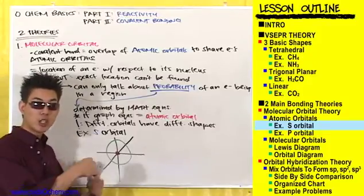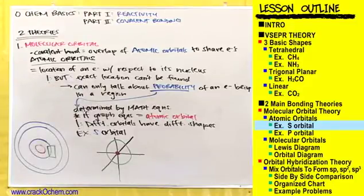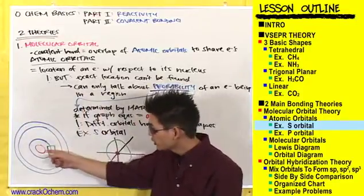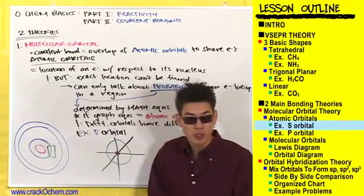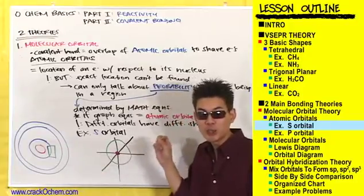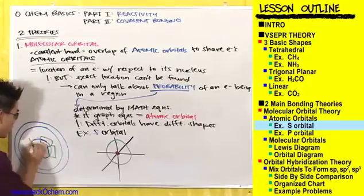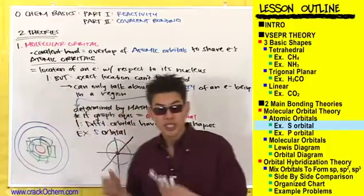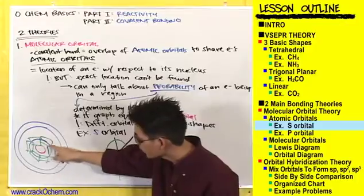Remember when we drew out the diagram of an atom? We've got our nucleus with the subshells around that, and the exact location of an electron in these green rectangular boxes — the orbitals. What this sphere is telling you is that electrons can be located anywhere in this subshell. It can be anywhere within this sphere.